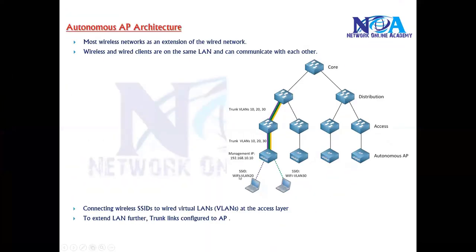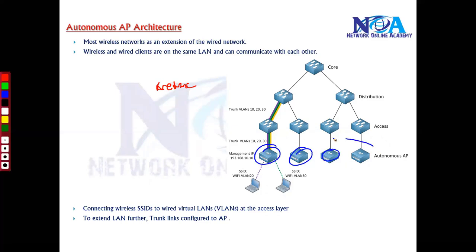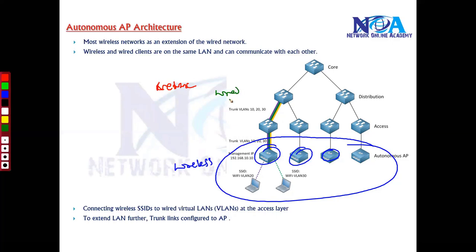The next thing we need to understand is that most wireless networks are actually an extension to your wired network. So when you're trying to set up any specific network, we use a wireless network — and this wireless network acts as an extension to your wired network, which means you still have a backbone wired network.